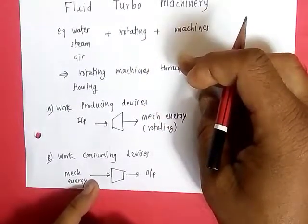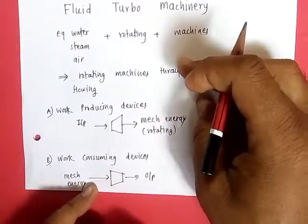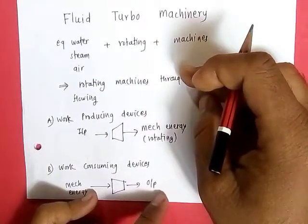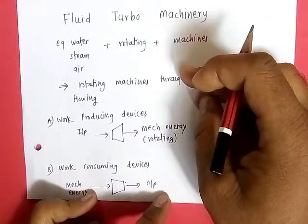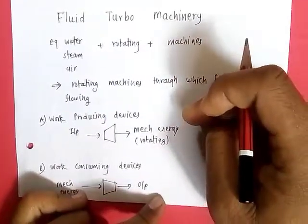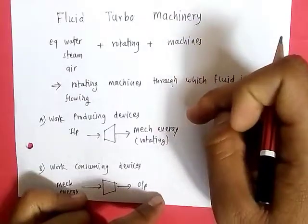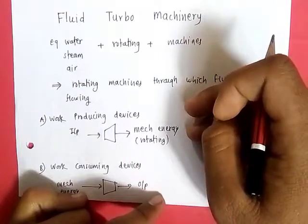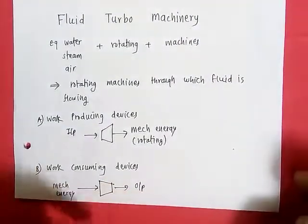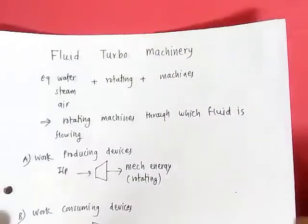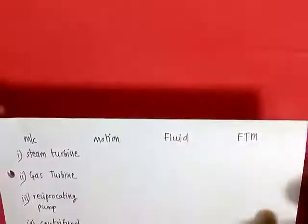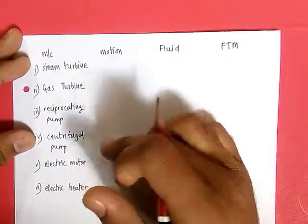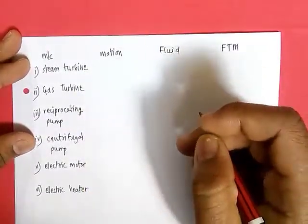Work consuming devices means they give any form of output by consuming some mechanical energy or using some mechanical energy. Then the device is called a work consuming device. For example, compressors and pumps are work consuming devices. Turbines take energy from any source or different sources and give you mechanical energy as output, so they are work producing devices.